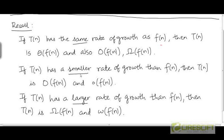What if t has a smaller rate of growth than f? Then it is a member of O and it is also a member of little o. Recall that little o is the set of functions that exclusively have a smaller rate of growth than f. And O contains functions that have the same rate of growth as f and a smaller rate of growth than f.